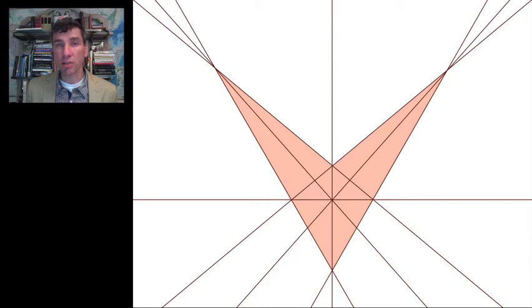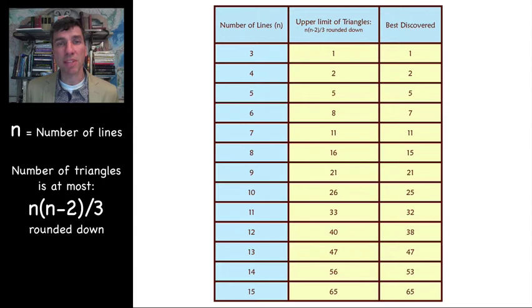And the quantity n times n minus two divided by three rounded down. And that's been proven to be an upper bound for the solution.